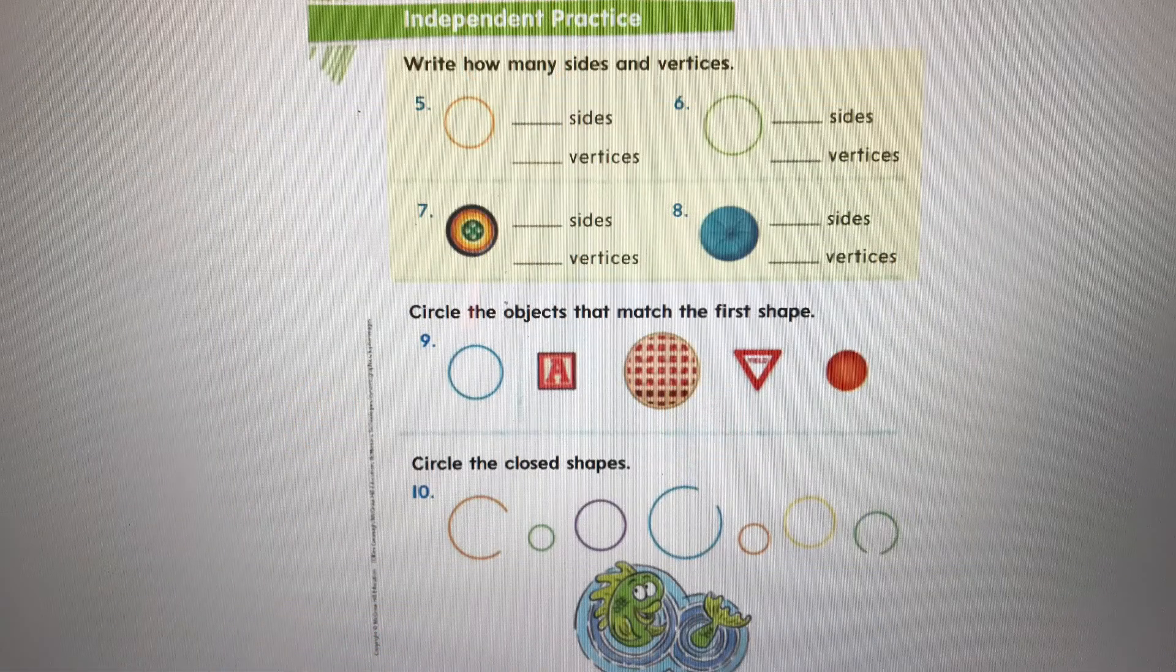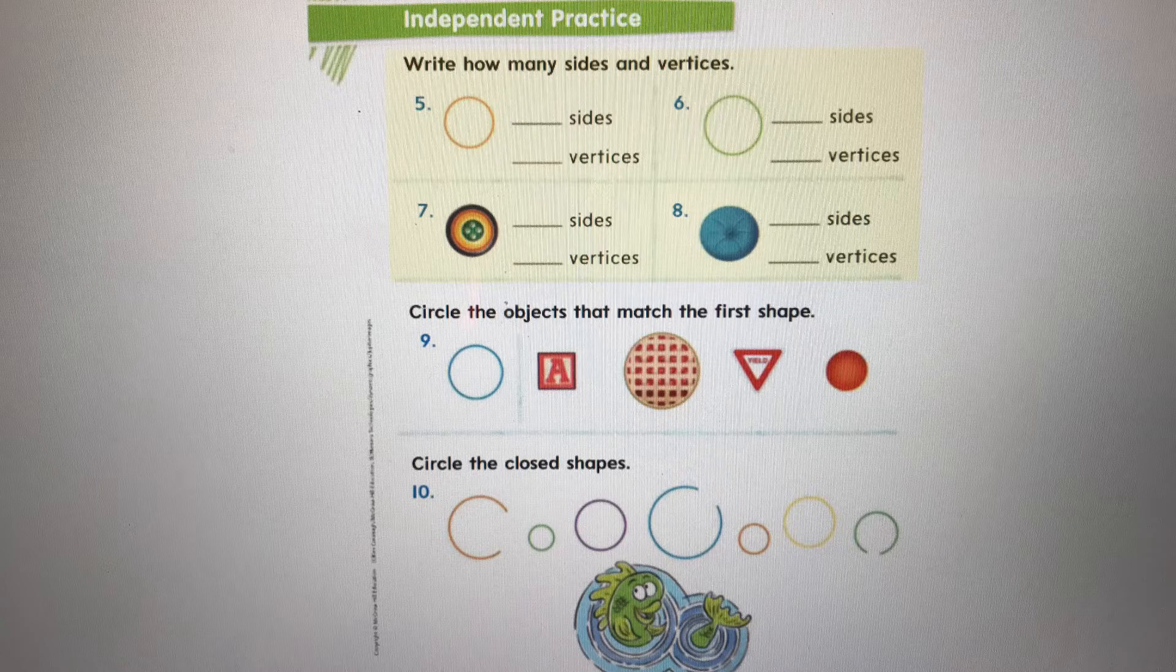Okay, boys and girls, this is our independent practice time, and I want you to practice more with circles. For problems five through eight, it wants you to write how many sides and vertices all these different circles have. And if that's a clue, you know what number should go on all of these lines. Remember, it's the same because a circle is round, it doesn't have any sides, and it doesn't have any vertices. So what number would you write? Zero.